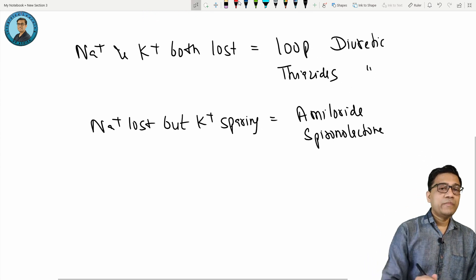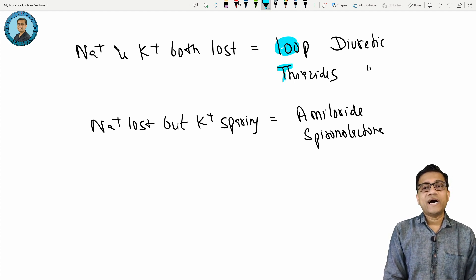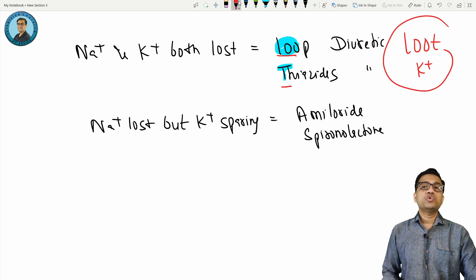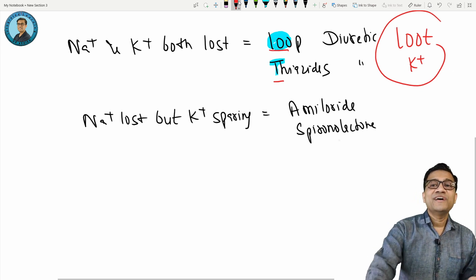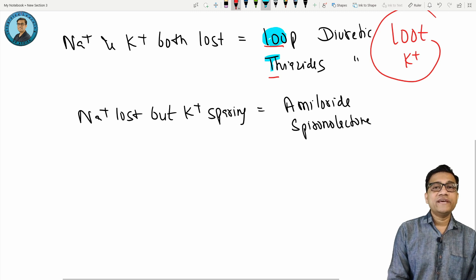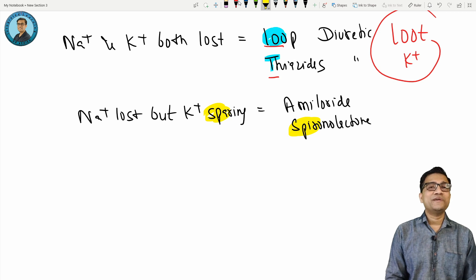How to remember? See, loop and thiazide - they are looting the sodium and potassium. They loot potassium and sodium. Remember loot? Who's looting sodium potassium? The answer is loop and thiazides. And what is sparing them? Spiro spare. Remember spironolactone spares.